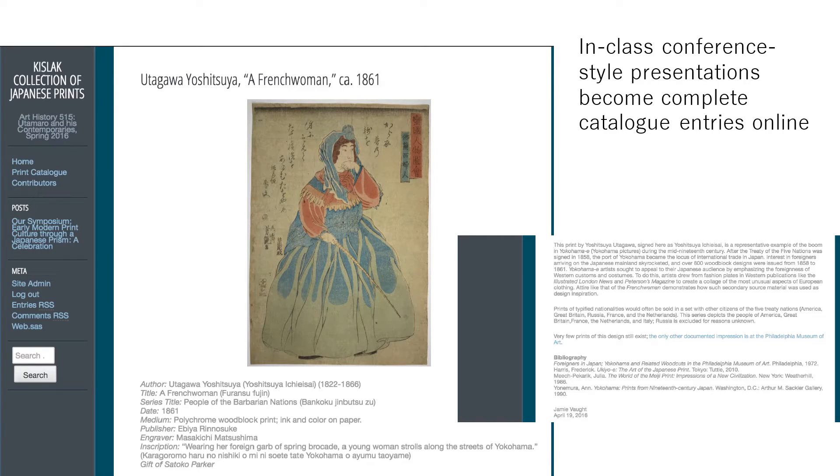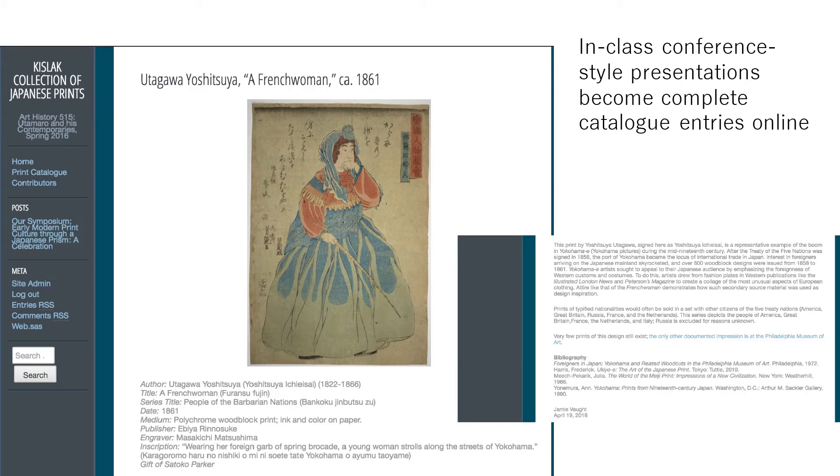We're closing the class with 20-minute conference-style presentations of the kind with which we are all familiar. It's a really important skill to learn how to give a 20-minute talk and stay within the bounds of that talk. This also meant that students did further research and came up with information about bibliography and comparanda, which you can see has been added to this particular entry. Our goal is to have this for each of the prints they worked on.